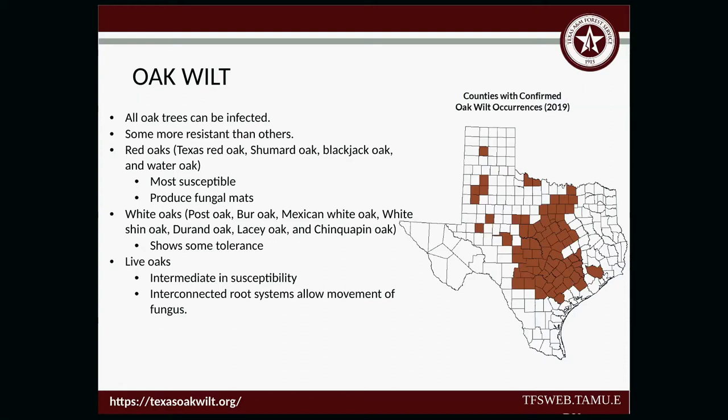If you know that you have oak wilt in an area, I highly recommend going ahead and doing an injection as a precaution — for instance, if your neighbors have it. But once a tree has it, you can't inject it to save it — it's done. It normally dies within about three to six weeks. Our white oaks — post oak, bur oak, Mexican white oak, white shin oak, Durand oak, lacy oak, and chinkapin oak — actually show some tolerance.